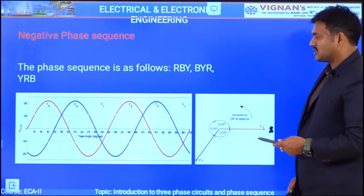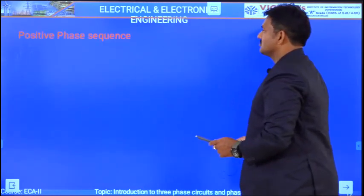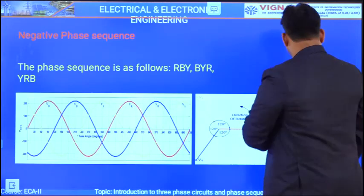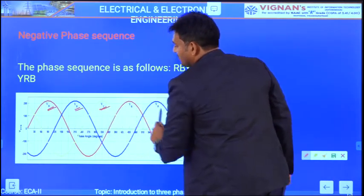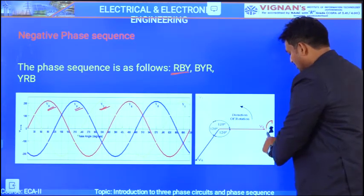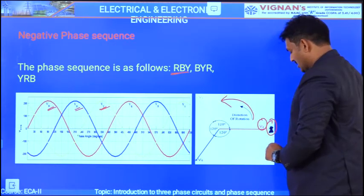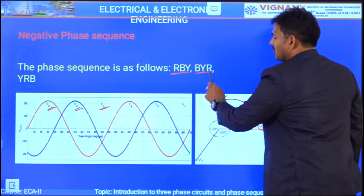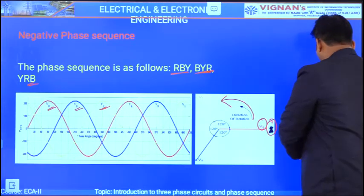For negative phase sequence, the phasor diagram shows R phase followed by B phase and then Y phase, giving sequence R-B-Y. An imaginary viewer seeing counterclockwise rotating phasors would observe R, then B, then Y. Equivalent sequences B-Y-R or R-B-Y are all the same and called negative phase sequence.